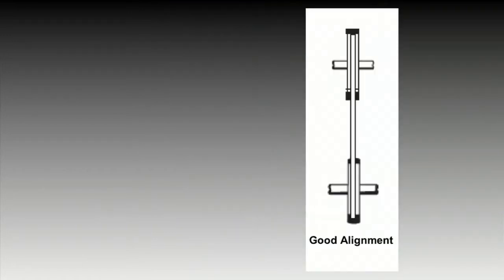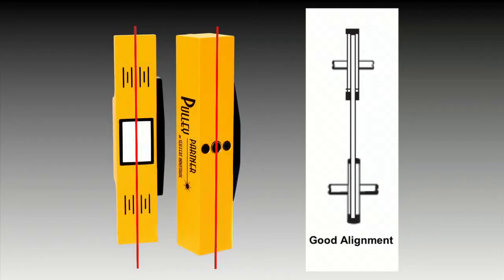Good alignment is achieved when the transmitter laser line and the corresponding reflected laser line coincide with the black reference lines on the reflector and laser transmitter, respectively.